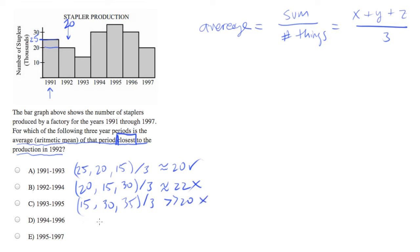Same thing with 94 to 96. It looks like 30, 35, and 30. Divide that by three, it'll be much greater than 20.